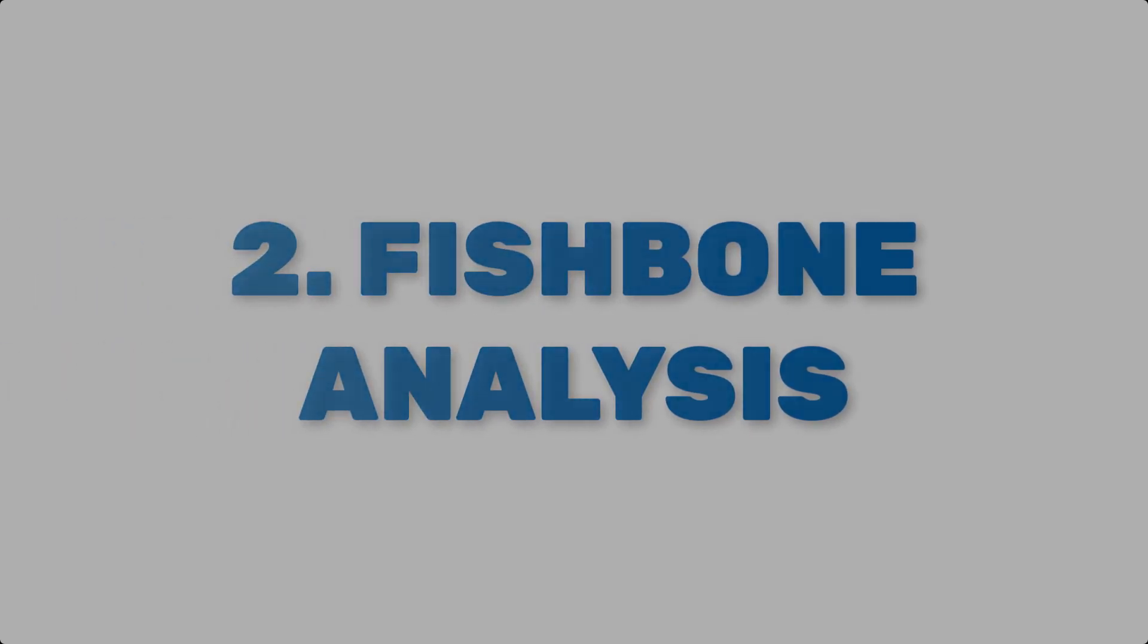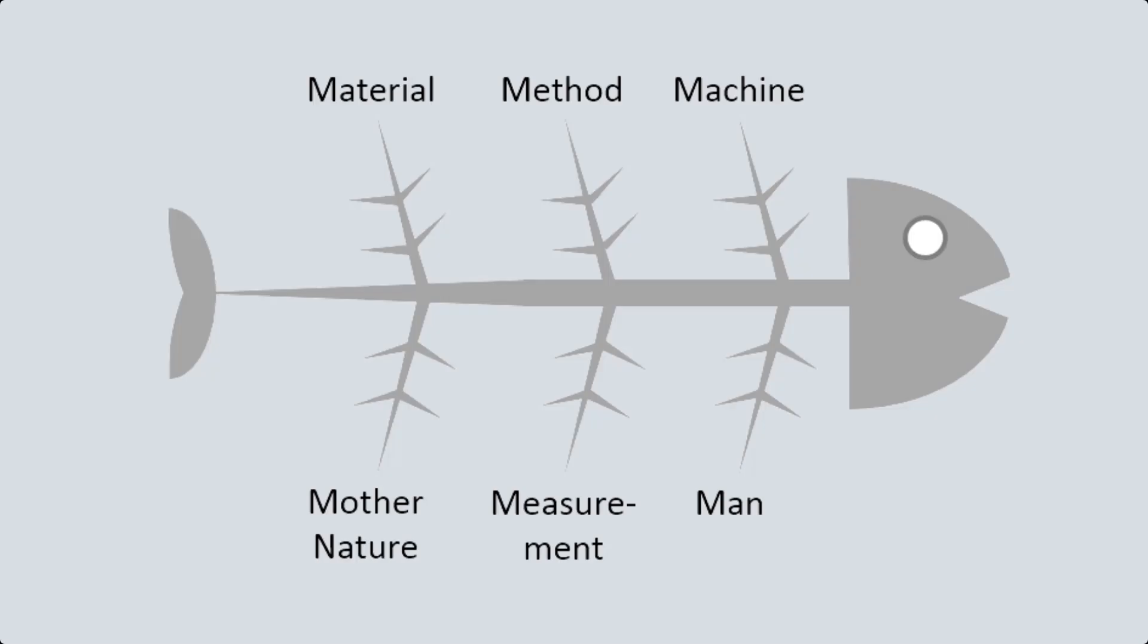Number two, fishbone analysis. Referring to the fishbone or Ishikawa diagram, this method visually represents the potential causes of a problem by categorizing them into various branches resembling the shape of a fishbone.